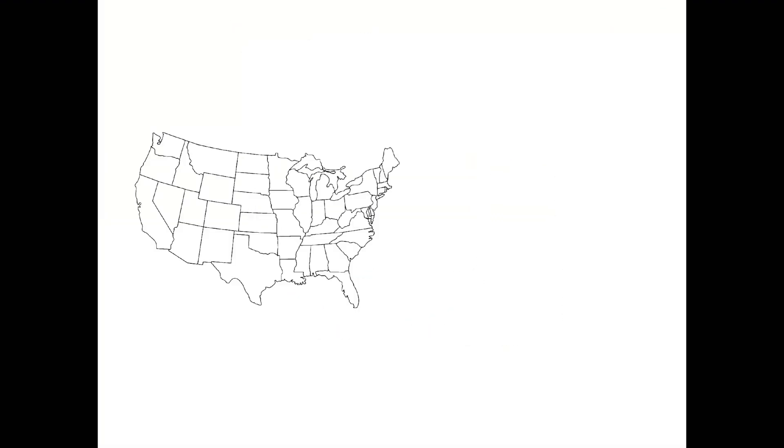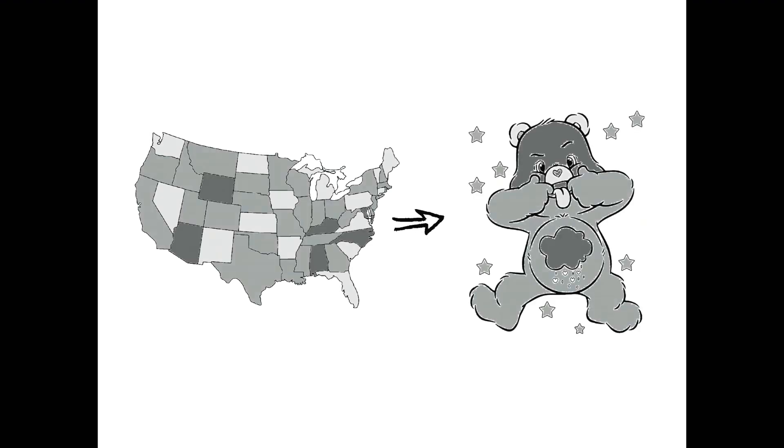When we say map, we mean any combination of lines or curves that divides a 2D plane into regions. Whether it be a map of the United States or a Care Bears coloring page, divisions of a plane into closed regions form a map.